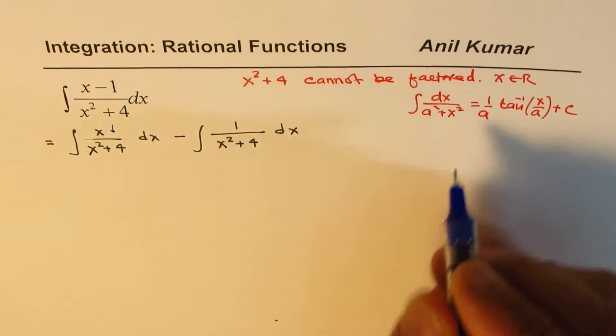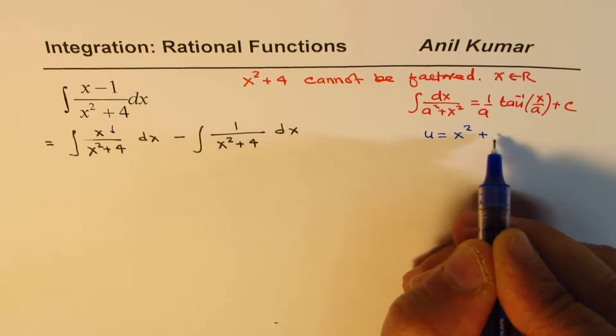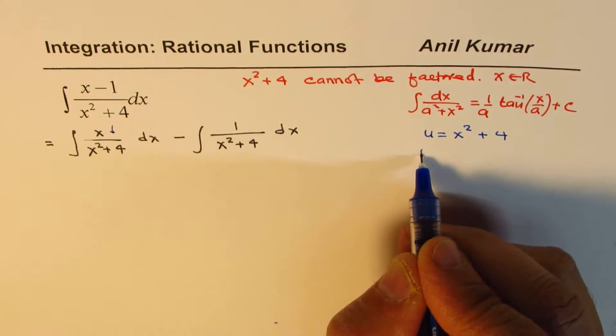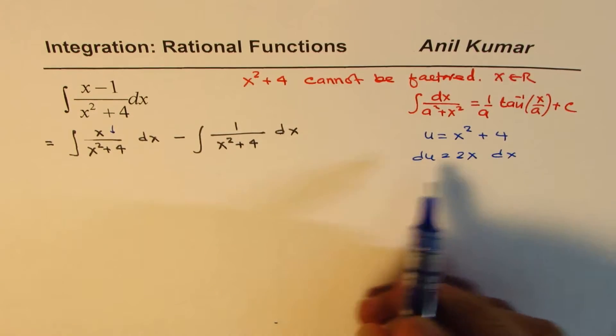So, we need to integrate this one first. Let us say that u equals to x squared plus 4. In that case, du equals to 2x dx.